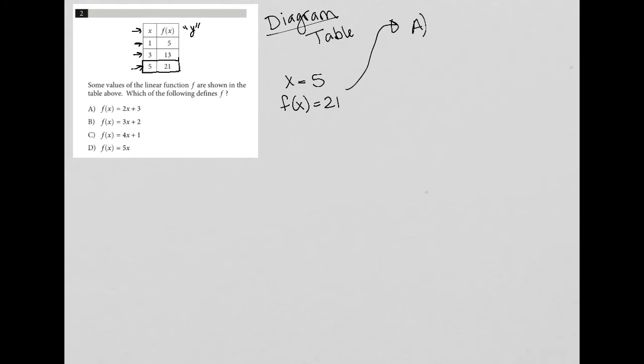So with choice A, is it true? So I have f of x equals 2x plus 3. I'm going to, again, using this information here, replace f of x with 21 equals 2, replace x with 5 plus 3. I see that that is not the case, right? 21 does not equal 2 times 5 plus 3. So A is gone.